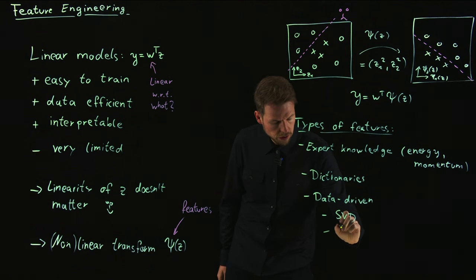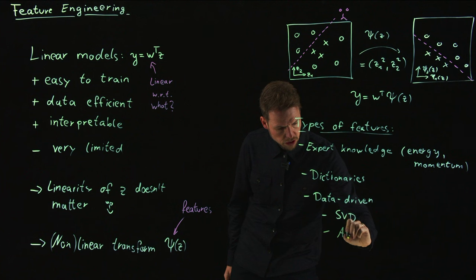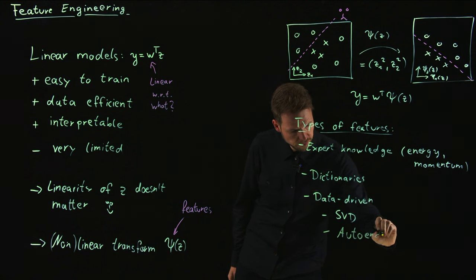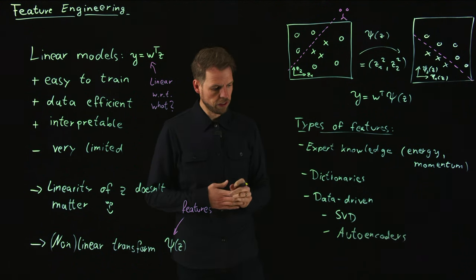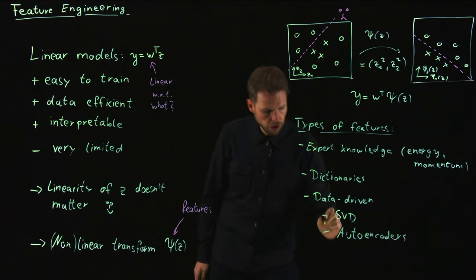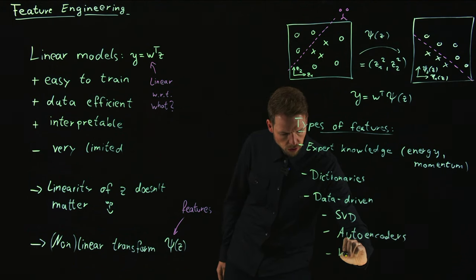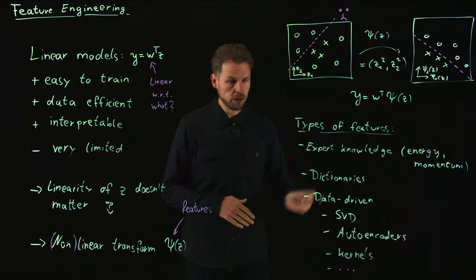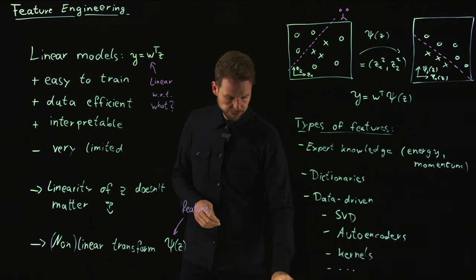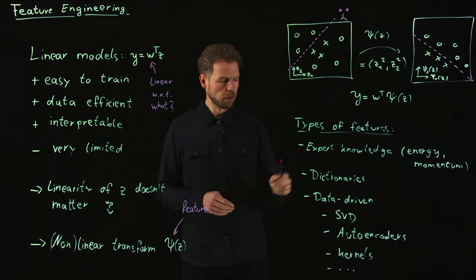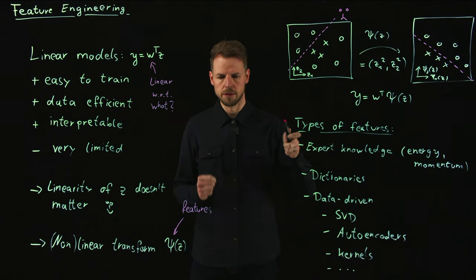You can use non-linear versions in the same way. These are called autoencoders, neural network extensions of the singular value decomposition if you wish. There are kernel methods and so on. There's actually quite a lot one can do. I'm not going to try to make a complete list out of this, but these are the things that are really important.